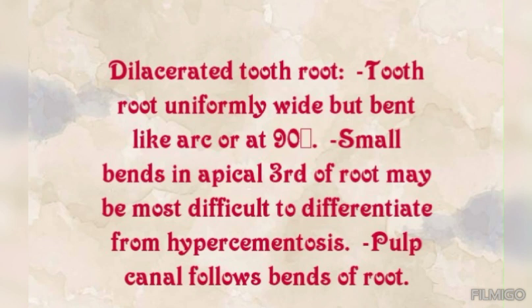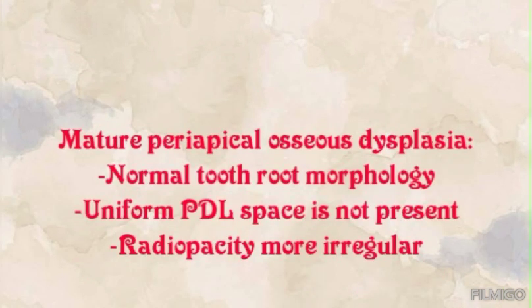Another differential diagnosis is dilacerated tooth root. The tooth root is uniformly wide but bends like an arc or at 90 degrees. A small bend in the apical third of the root may be most difficult to differentiate from hypercementosis. The differentiating feature is that the pulp canal follows the bend of the root.